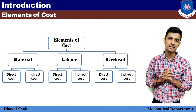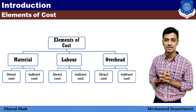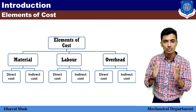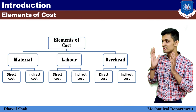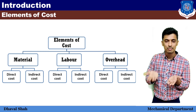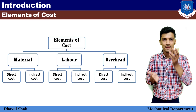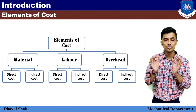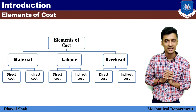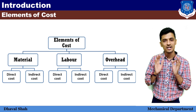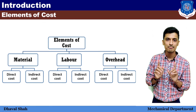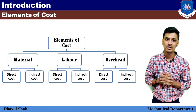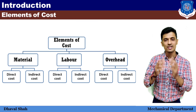Material cost ho, labor cost ho, ya phir overhead cost ho — uske andar do do parts rehte hain: first one is direct cost and second one is indirect cost. Direct cost ka matlab hota hai ki jo cost humari production ko affect karti hai — matlab aisi cost agar woh badh jaye toh humari product ki value badh jaati hai, aur aisi cost agar kam aa jaye toh humari product ki value kam aa jaati hai. Usko kehte hain direct cost.